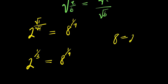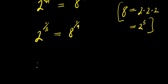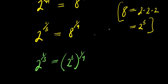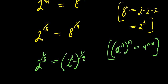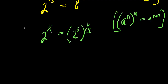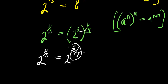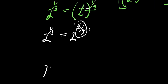So we have 2 to the power of (1/3) equals 8 to the power of 1 over 9. Since 8 is 2 times 2 times 2, that is 2 to the power of 3. So the right side becomes 2 to the power of 3, raised to the power of 1 over 9. Applying the power-of-power rule: multiply the exponents, 3 times 1 over 9, the 3 cancels with the 9 to give 1 over 3. So we have 2 to the power of 1 over 3, equals 2 to the power of 1 over 3.